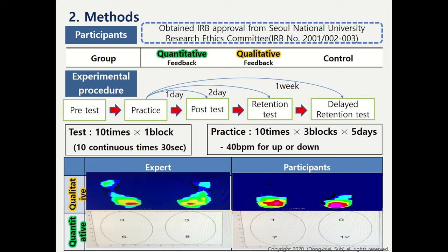All groups had a common view of themselves and a skilled video. The qualitative group was trained on color codes that appear from the skilled performer at the down and up positions, and then received color code feedback of plantar pressure while squatting. The quantitative group was trained on number codes that appear from the skilled performer at the down and up positions, and then received number code feedback of plantar pressure while squatting.